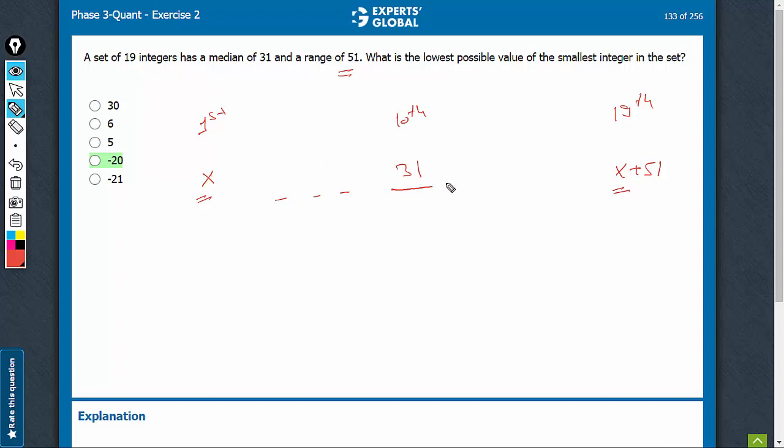Imagine tenth onwards, all the terms can be equal to 31. So tenth term is 31. Nineteenth term can also very well be 31.